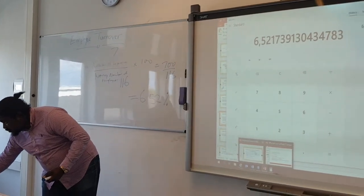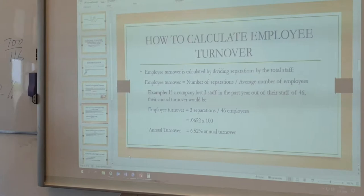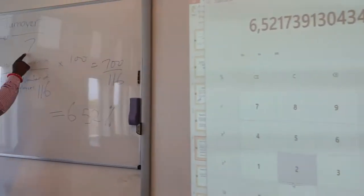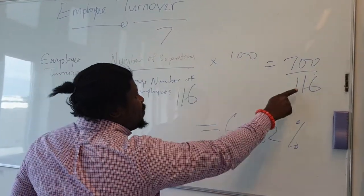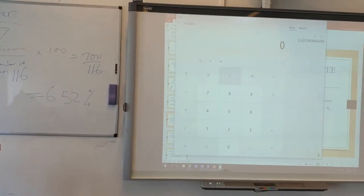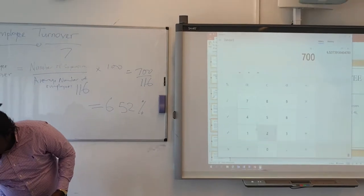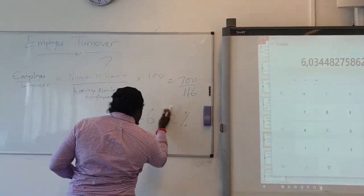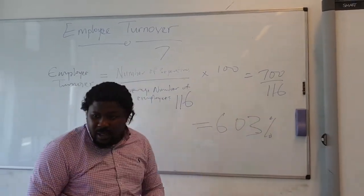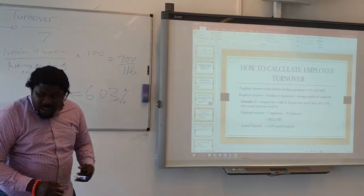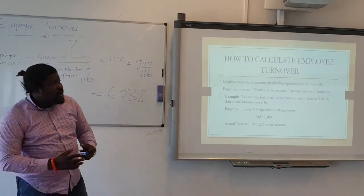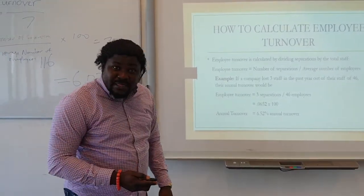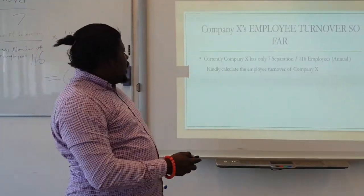From the first example, we had 300 ÷ 46 = 6.52. Now for this example, we have 7 people who left the company over a total of 116 employees, times 100. So that gives us 700 divided by 116. Your answer should be 6.03%. So the employee turnover of Company X is 6.03%. The formula is: Number of Separations ÷ Total Number of Employees × 100.